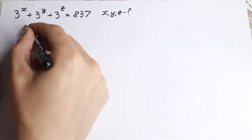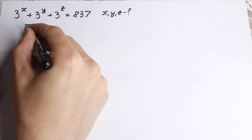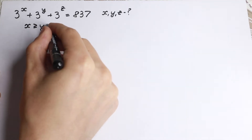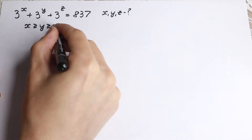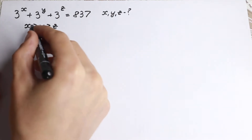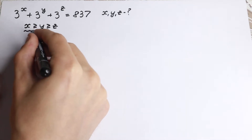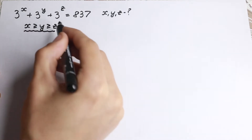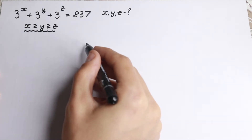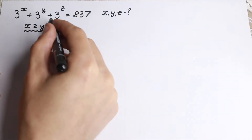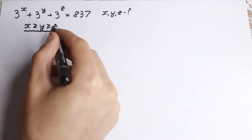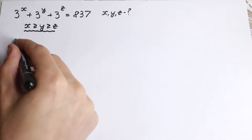First, let's suppose that x is greater or equal than y, and y is greater or equal than z. Let's suppose this inequality is correct. And right now I suggest you to factor out 3 to the power z.